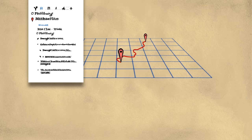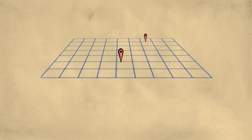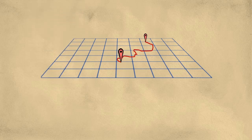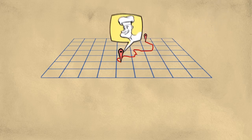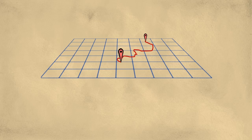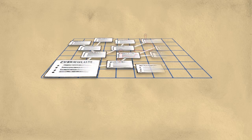They even respond to the mistakes that we make and help us find our way back on track. They can also help us find places that we didn't even know we were looking for — for example, local chefs' favorite restaurants that are within walking distance of where we happen to be at the moment. If you think about it, a map is a pretty good metaphor for educational content. We even use that metaphor explicitly — we'll talk about a curriculum map, for example.